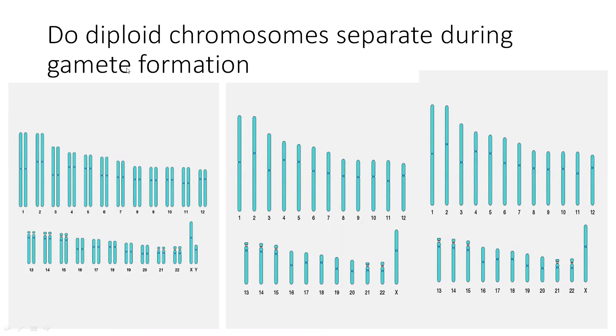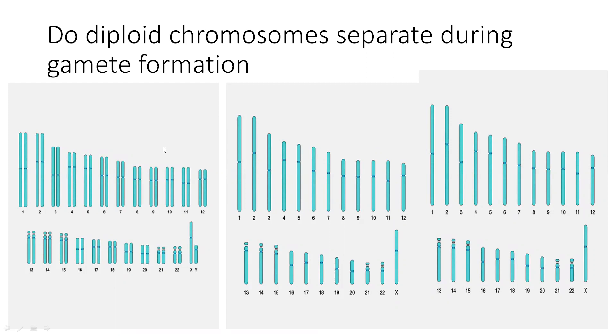Do diploid chromosomes separate during gamete formation? Yes. The diploid is converted into haploid.